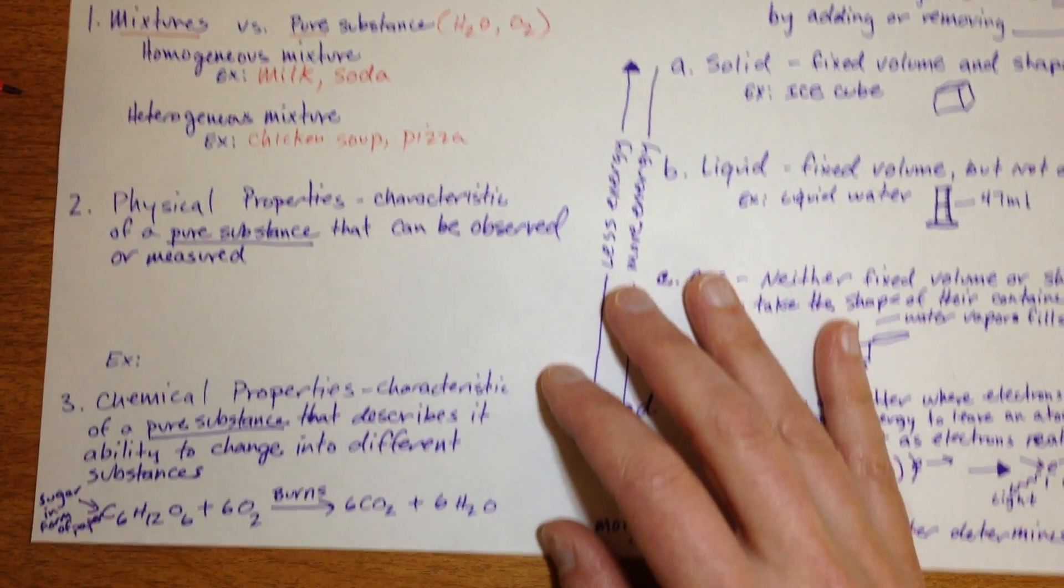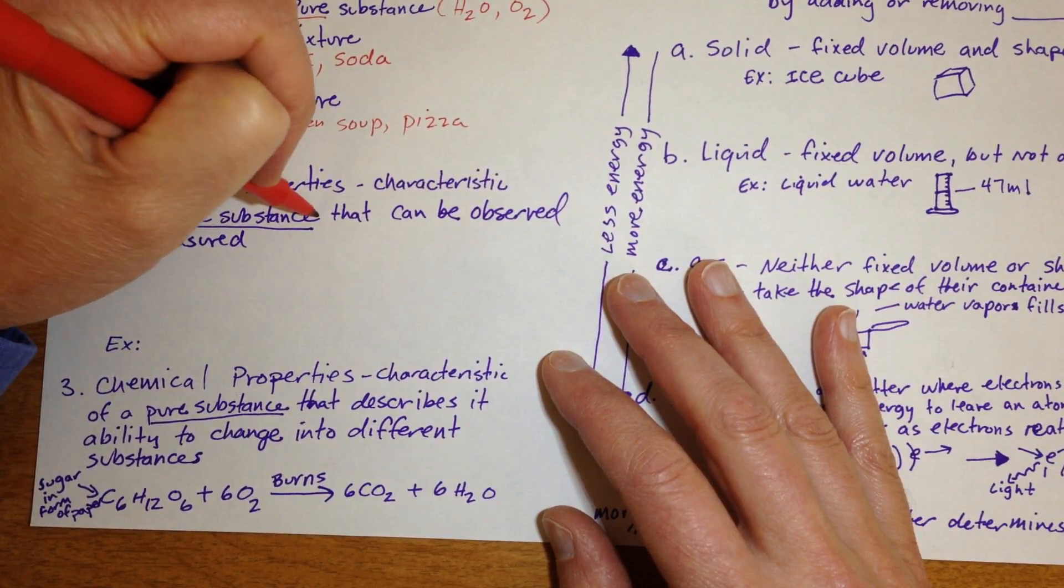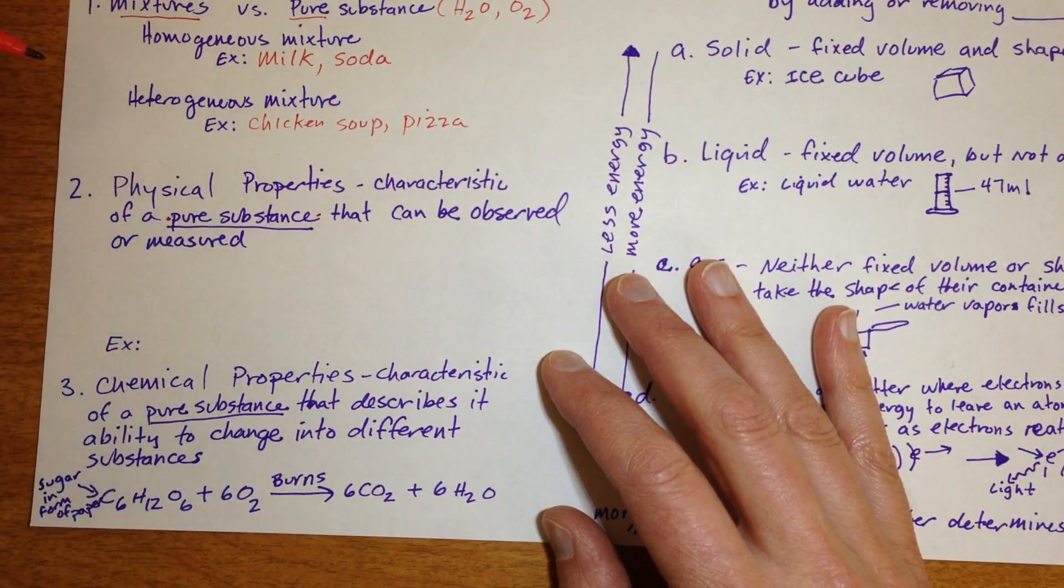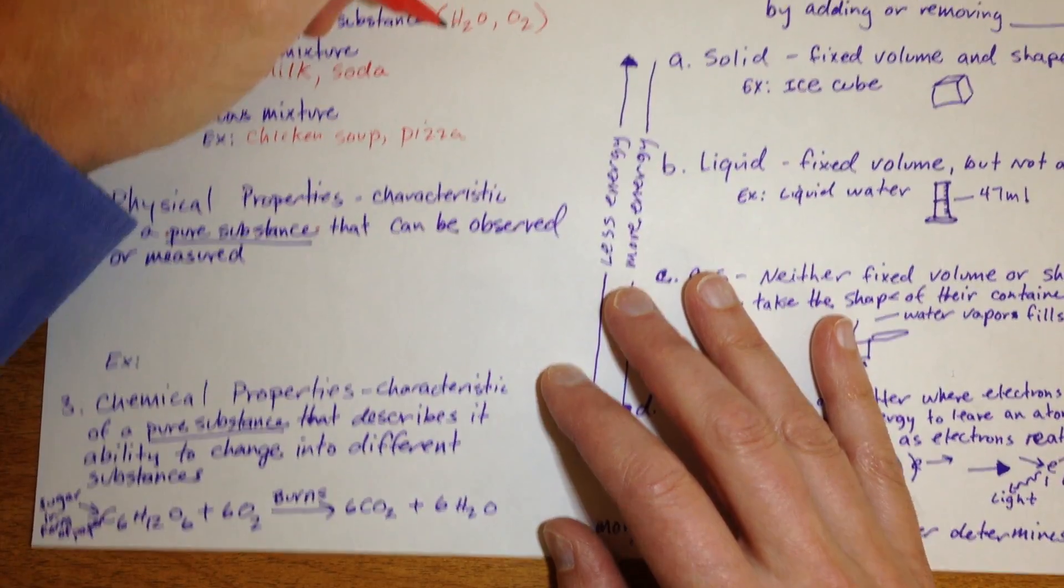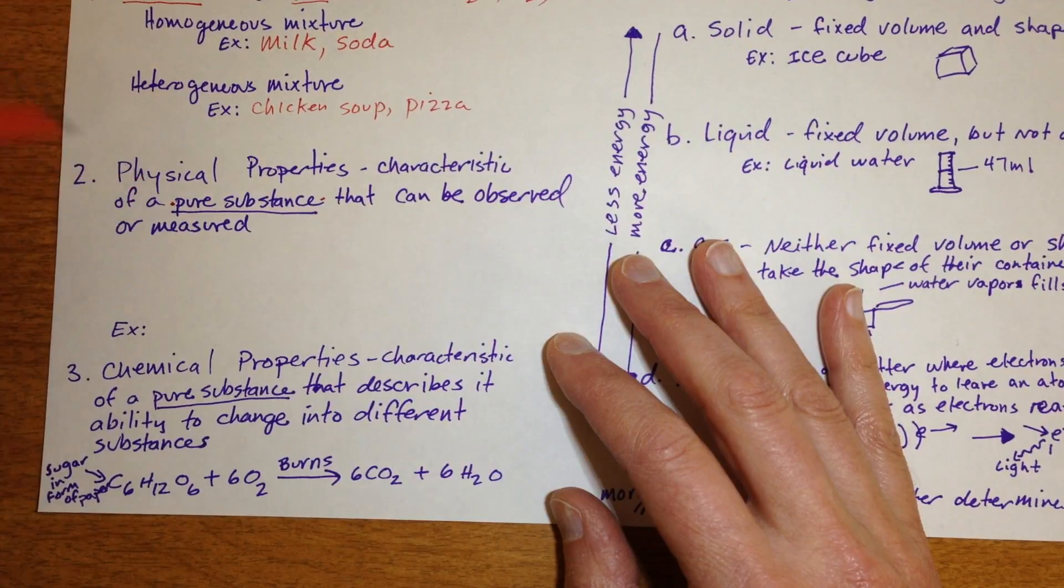So moving on from that to physical properties, physical properties are characteristics of a pure substance, not a mixture now, so pure substance, so like just water or just oxygen, but a pure substance that can be observed or measured.